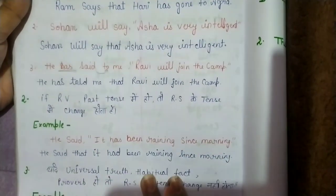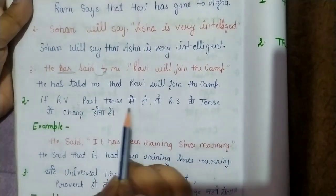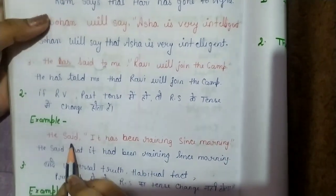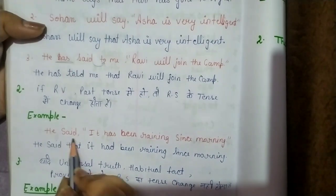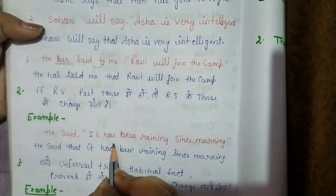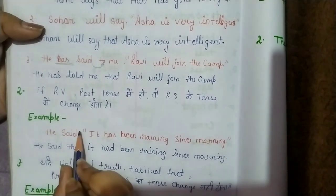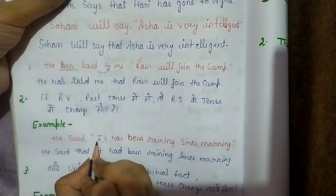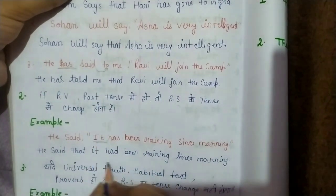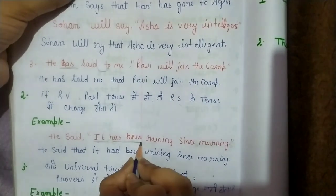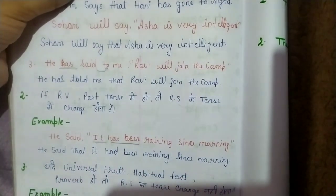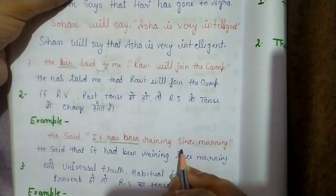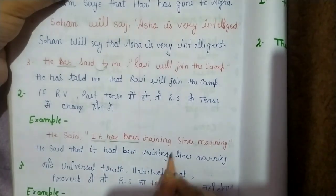Let's understand another rule. If the reporting verb is in past tense, you will change the tense. For example: He said — it has been raining since morning. 'Said' has no object so it stays 'said'. Now 'has been' is present perfect, so it changes to past perfect — had been. The answer: He said that it had been raining since morning.